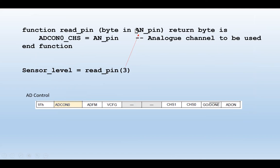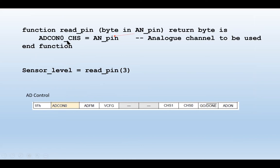For the setup stage: we want to read pin 3 and we've sent pin 3 into the function. That doesn't make it happen — you've got to tell the chip itself what pin you want to use, and that's where we come down to the AD control and the analogue-to-digital control register. So we send the three from ordinary code into the function, and that's the first line you see inside the function: the channel select. ADCON3 is going to be set to a value of three, putting three into the AD control — these two bits here.